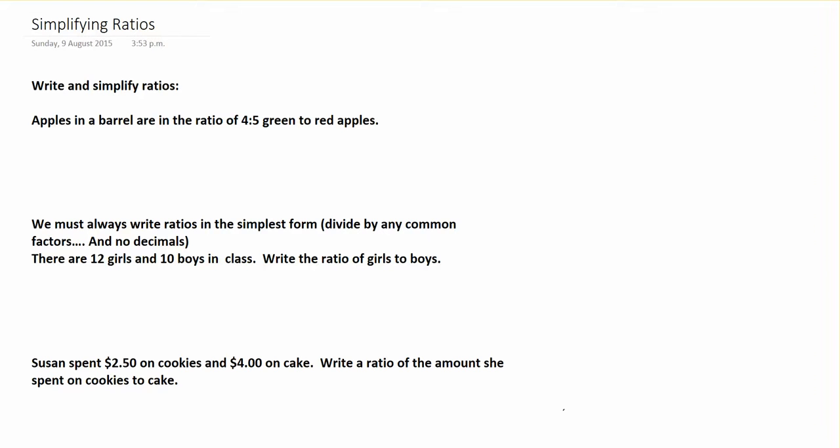If we look at an example such as this: apples in a barrel are in the ratio of 4:5 green to red apples. What happens is if I've got a big barrel full of apples, this means I could potentially have four green apples and five red apples in that barrel.